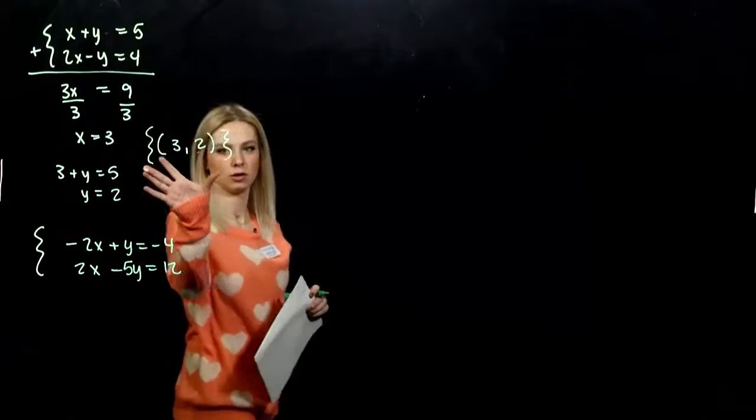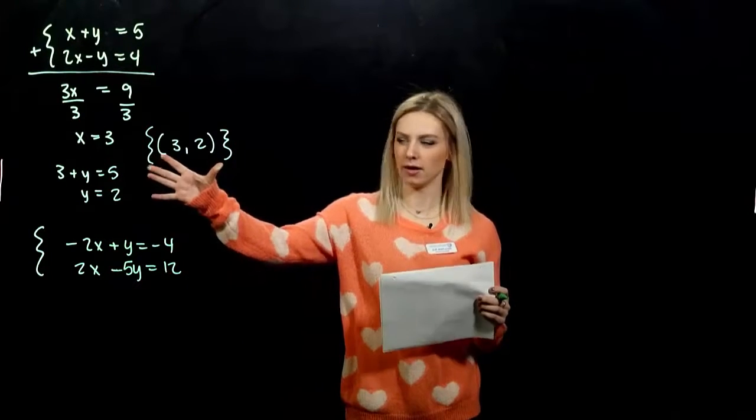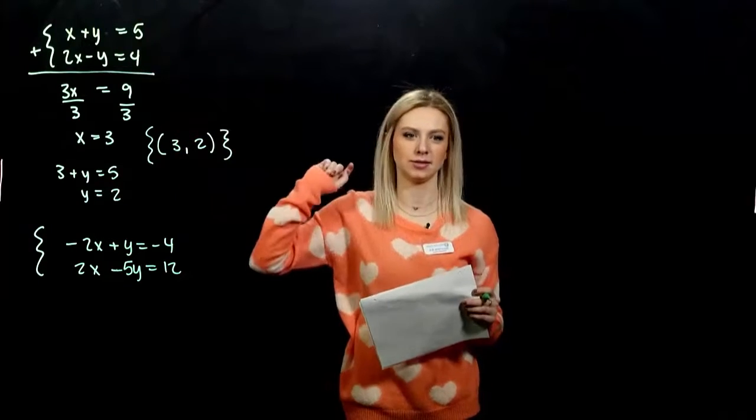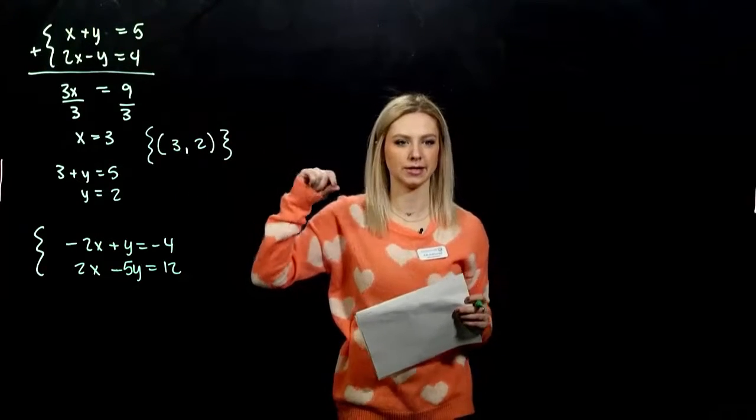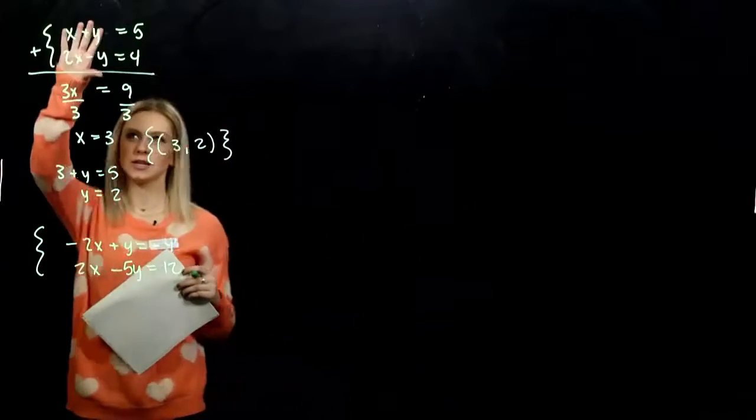So again, the little squiggles on the side, the little braces, they just mean the set. The set of all points that satisfy that system. Only one point satisfies the system. They intersect at one spot. So in that case, we eliminated for y.